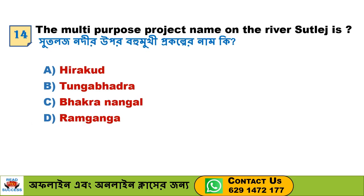Next question: The multi-purpose project on the river Sutlej is — Option A. Hirakud, Option B. Tungabhadra, Option C. Bhakra Nangal, Option D. Ramganga. Option C, Bhakra Nangal, is the correct answer.